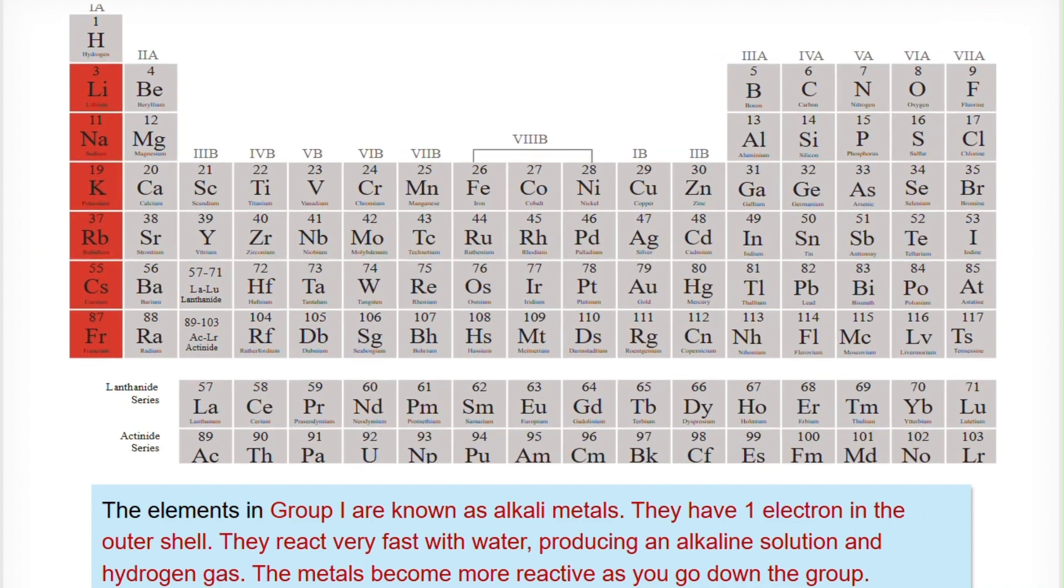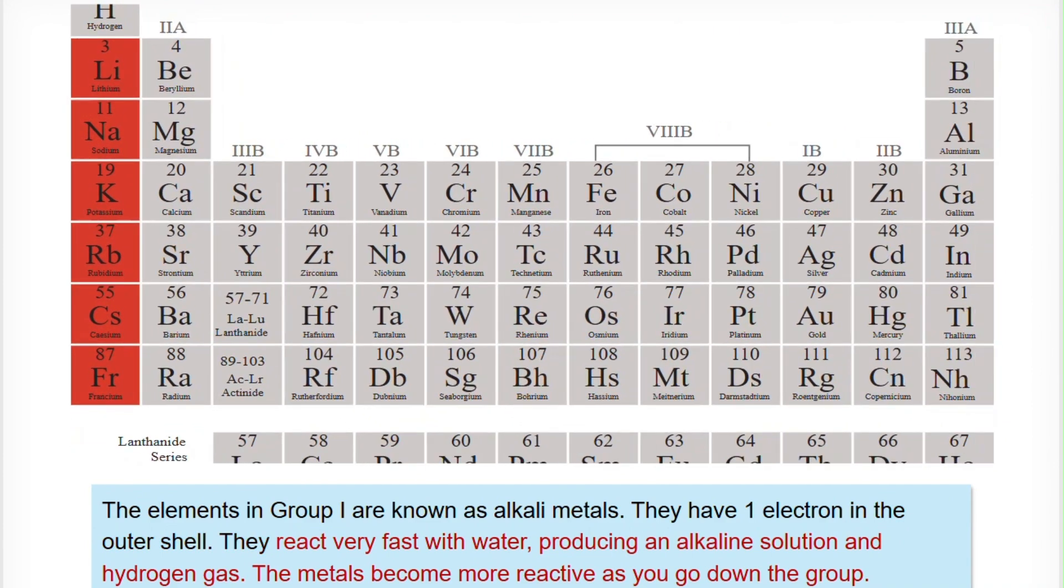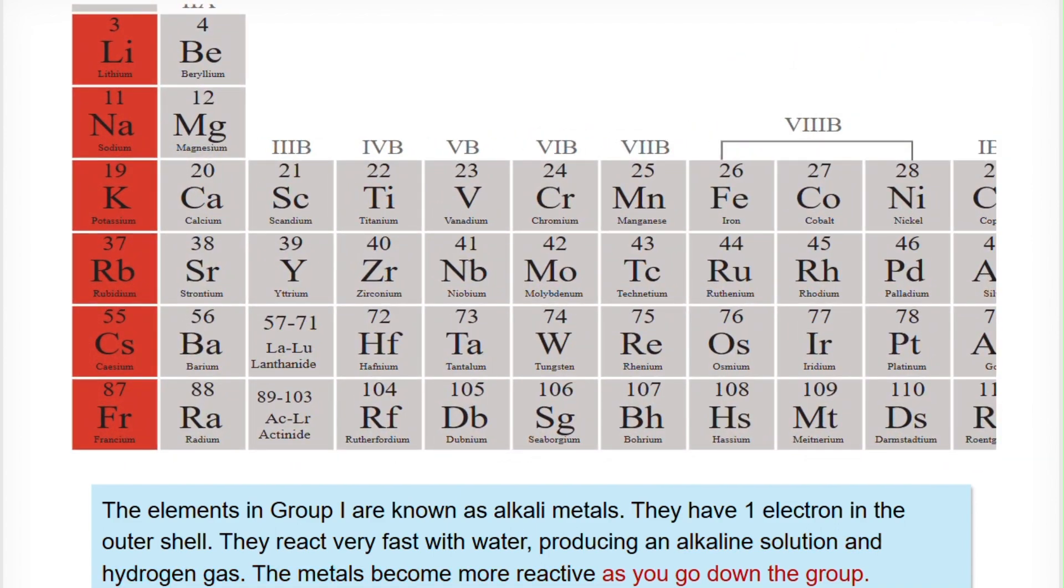The elements in group 1 are also known as alkali metals. They have one electron in the outer shell. They react very fast with water, producing an alkaline solution and hydrogen gas. The metals become more reactive as you go down the group.